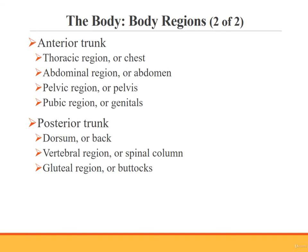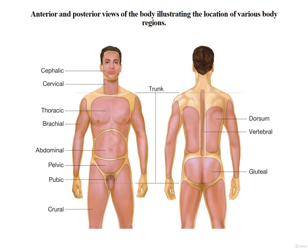The first trunk region is the thoracic region, more commonly called the chest. It is found on the anterior side of the trunk and may also be called the thorax. The abdominal region is typically referred to as the abdomen and is found on the anterior side of the trunk. The pelvic region consists of the pelvis and is also on the anterior side. The pubic region contains the external genitals and is the last of the anterior trunk regions. The dorsum is a posterior trunk region, commonly referred to as the back. The vertebral region overlies the spinal column and is also on the posterior side. The final posterior region of the trunk is the gluteal region, which consists of the buttocks. This figure illustrates the anterior and posterior regions of the body.